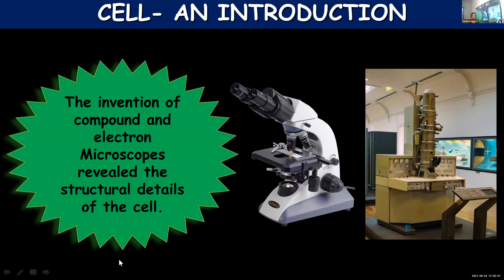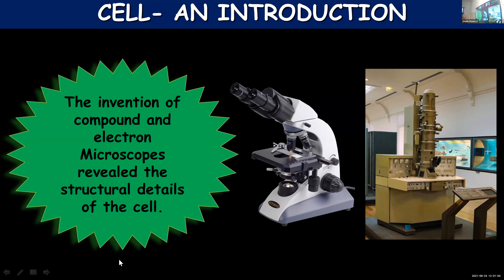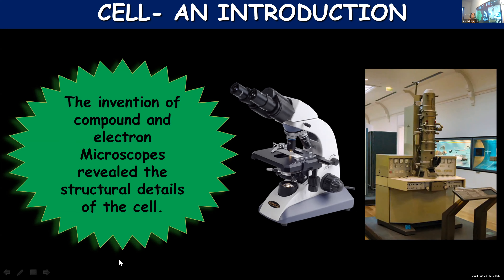These scientists observed living and dead cells through the microscope, which was not as sophisticated as present-day microscopes. But with the invention of compound and electron microscopes, the structural details of the cell were revealed. Earlier they could only examine cells, but the structural details were not observable. Later, with compound and electron microscopes, scientists were able to learn the structural details of the cell.